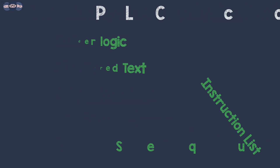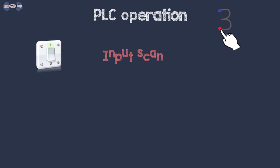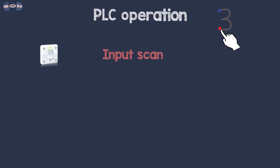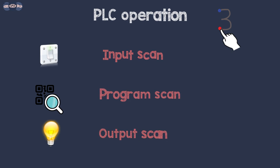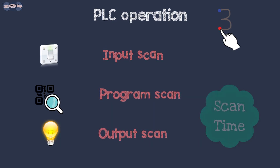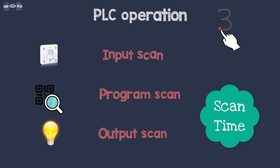A PLC operation consists of three steps: input scan — it checks the status at the input side; program scan — the CPU starts executing the application program written in PLC programming language; and output scan — it writes the data into the output module so that all the outputs are updated.